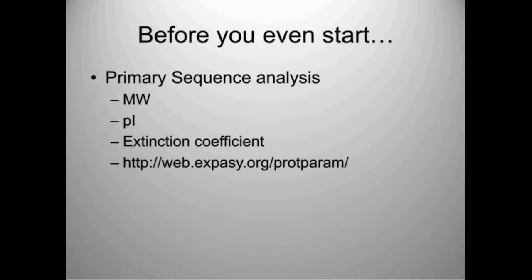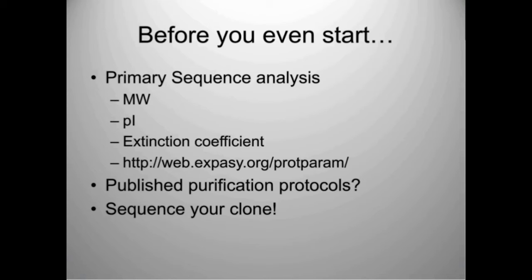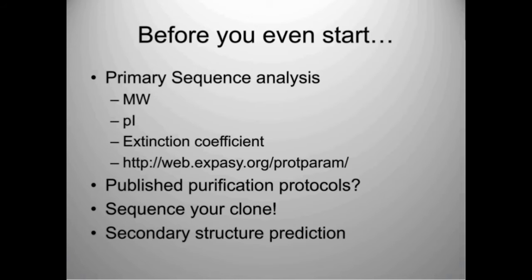Check if there are published purification protocols—if your protein has been purified before, there's no sense reinventing the wheel. Even similar proteins, like a dehydrogenase from E. coli versus MTB, are likely purified similarly. Always sequence your clone regardless of where it came from—trusting other labs can cost a lot of time and money if the sequence is wrong. Also consider secondary structure prediction to identify large unstructured regions that might be amenable to proteolysis or cause difficulty in purification.